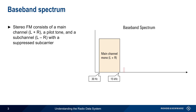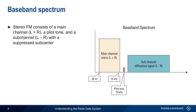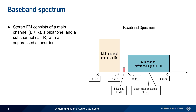A pilot tone at 19 kHz is used to indicate the presence of the stereophonic difference signal. This signal is located between 23 kHz and 53 kHz, with a suppressed carrier at 38 kHz, which is the second harmonic of the pilot tone.